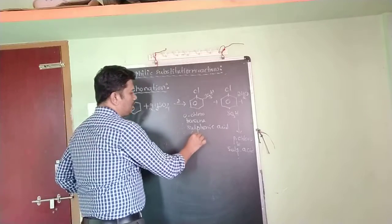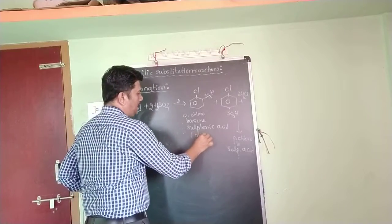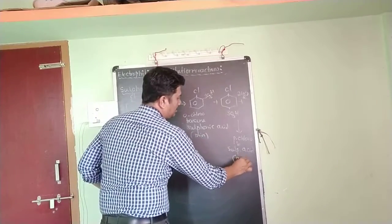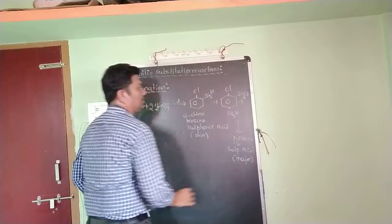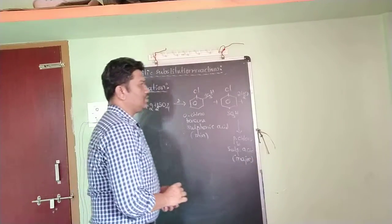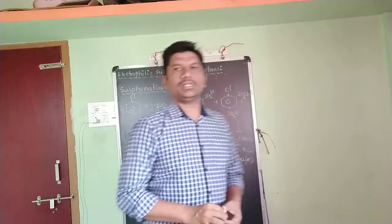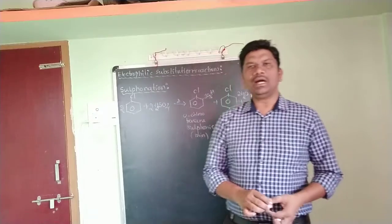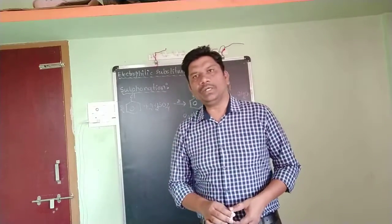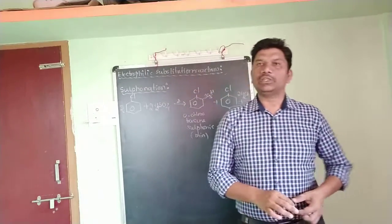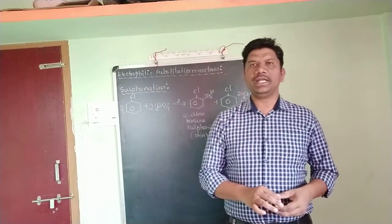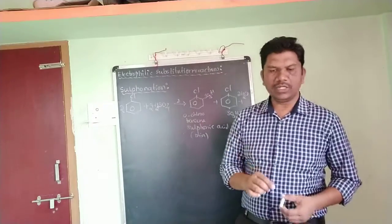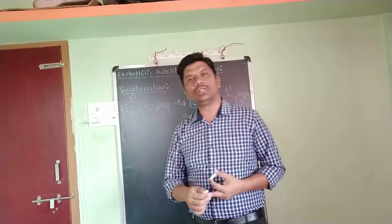One product is the minor product and the other is the major product. That is the sulfonation reaction of chlorobenzene. In total, I have covered five electrophilic substitution reactions, the first being halogenation, that is chlorination.